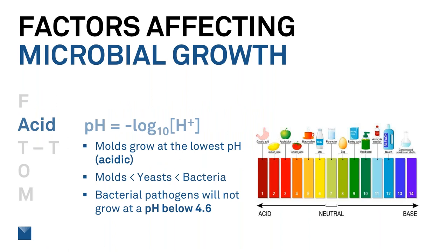For acids, we're talking about pH. Molds can grow at the lowest pH, so in more acidic conditions. As a progression between molds, yeast, and bacteria — molds can go the lowest, yeasts are in the middle, and bacteria are the highest. Importantly, bacterial pathogens will not grow at a pH below 4.6, which is going to be a really crucial factor as we go along.